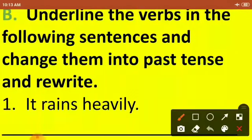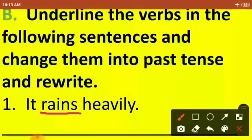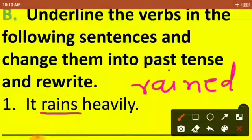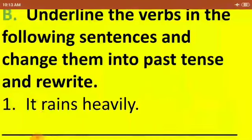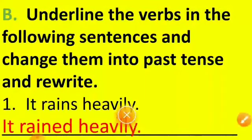Let's do the first question: It rains heavily. Step one — underline the verb. The verb is 'rains.' What is the past tense of 'rains'? The past tense of 'rain' is 'rained.' So we will rewrite this sentence using the verb 'rained,' and it will look like this: It rained heavily.